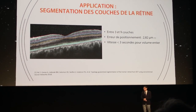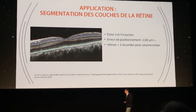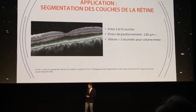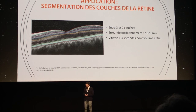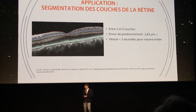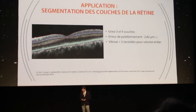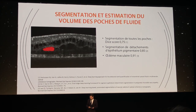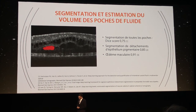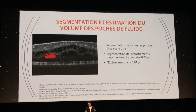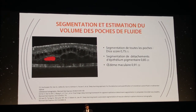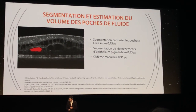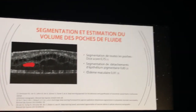In the literature, what are the most commonly found applications? The very first and most visible is the segmentation of retinal layers. Depending on the study, it segments between 3 and 9 layers, achieving an extremely modest error of 3 microns and speeds under 3 seconds. We can also segment and estimate the volume of fluid pockets, achieving a DICE score of 0.75 for undifferentiated fluid segmentation — already a very good score — and a DICE score of 0.91 when specializing in specific lesions such as macular edema, which is really very good.